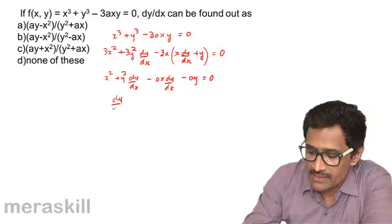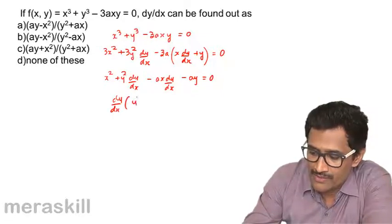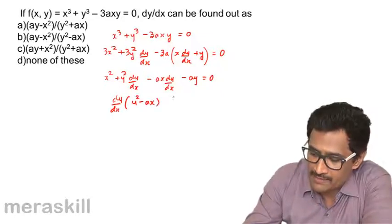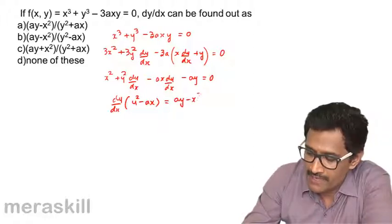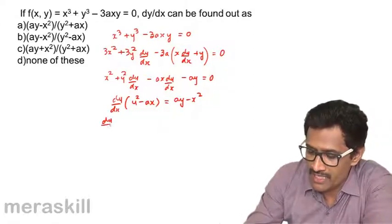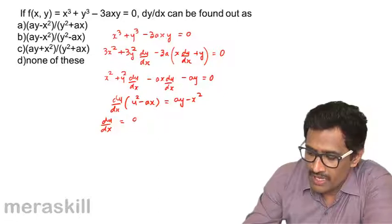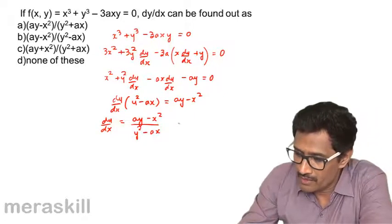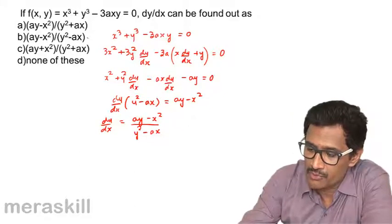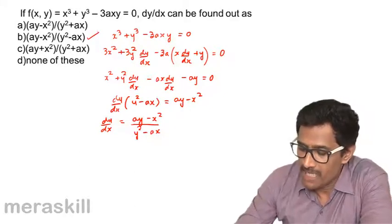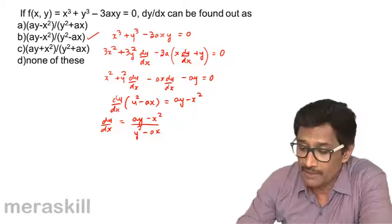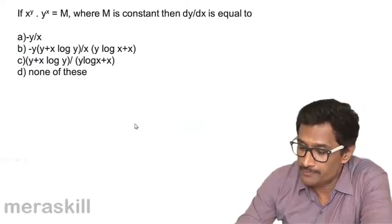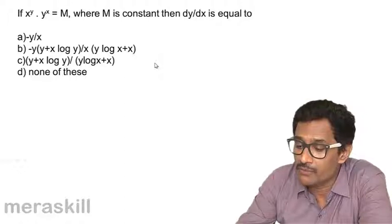Collecting dy/dx terms: dy/dx times (y² − ax) equals ay − x². Therefore dy/dx equals (ay − x²) divided by (y² − ax). This is option B.